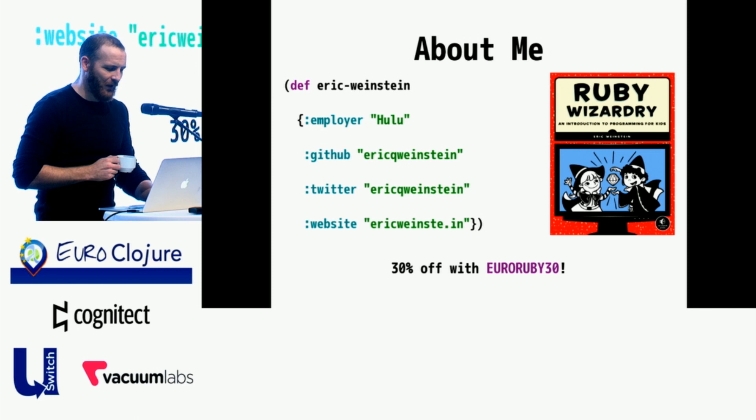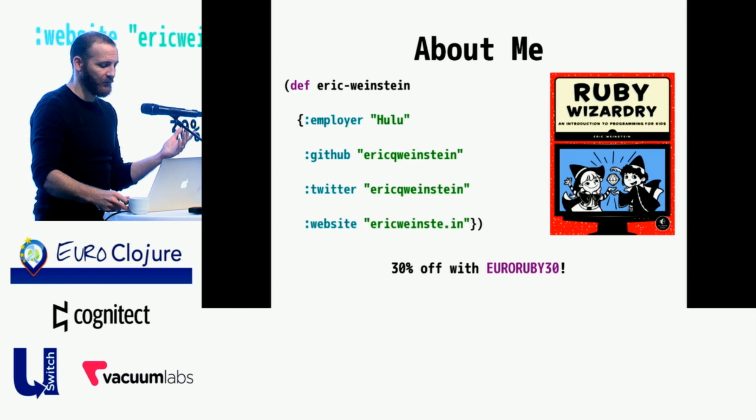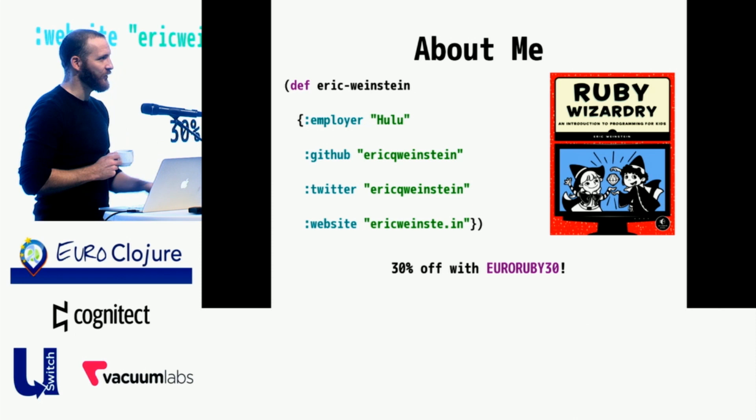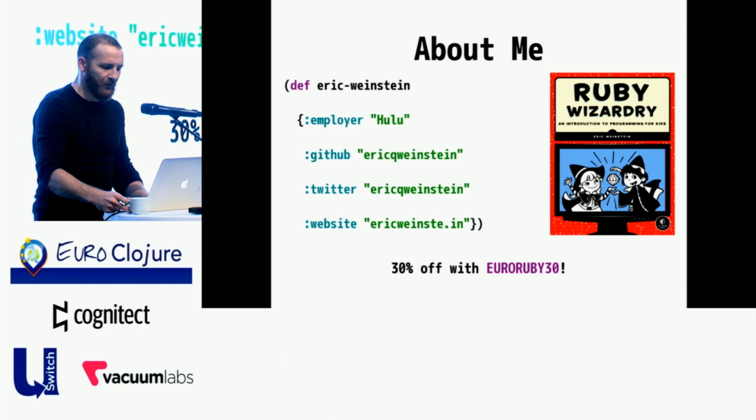I've been writing Clojure for about three years. I'm still extremely new at this. This is actually my first Clojure conference, so this is really exciting. I also recently wrote a book called Ruby Wizardry that teaches Ruby to 8 to 12-year-old kids. If you're interested, please come find me after the show. There's a EuroRuby 30% discount at the NoStarch website.